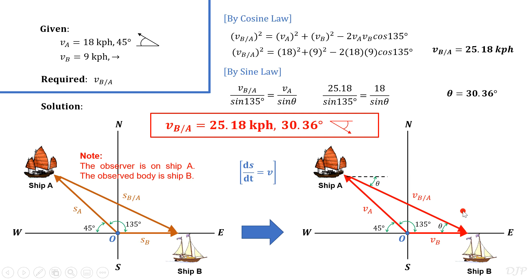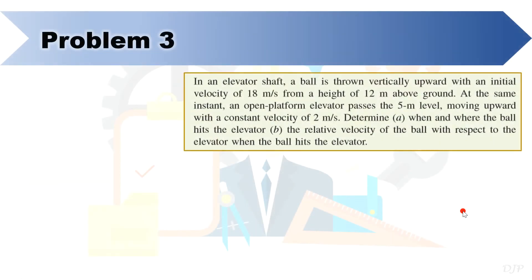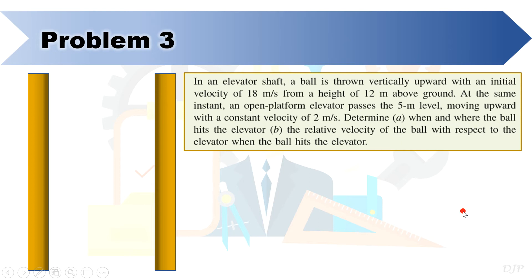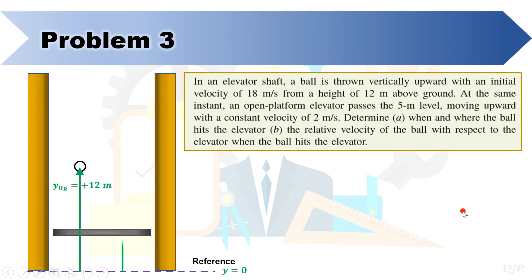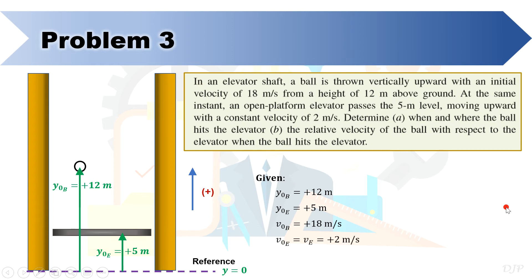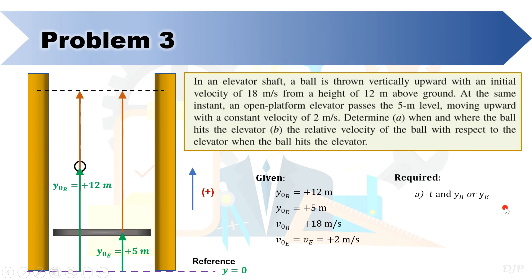Let us now proceed with our third sample problem. In an elevator shaft, we are given a ball thrown upward from a height of 12 meters, and at the same time, an open platform elevator located at the 5 meter level. The ball has an initial velocity of positive 18 meters per second, while the elevator has a constant velocity of positive 2 meters per second. We are then asked to solve for the time and location when the two objects collide, and the relative velocity of the ball with respect to the elevator at that instant.